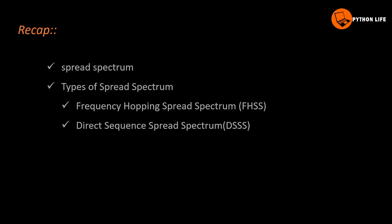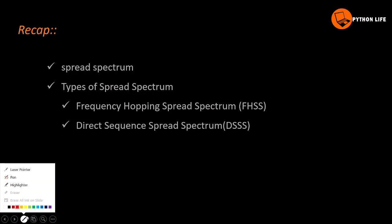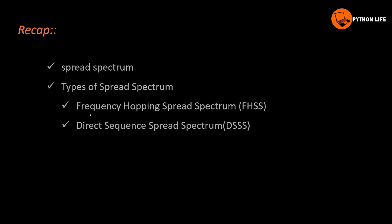In the previous class, we covered spread spectrum topics: frequency hopping spread spectrum, direct sequence, and frequency division. Direct sequence is divided by blocks and signals. This is a spectrum overview.